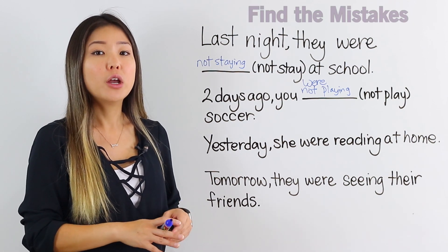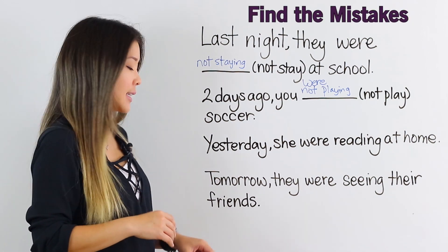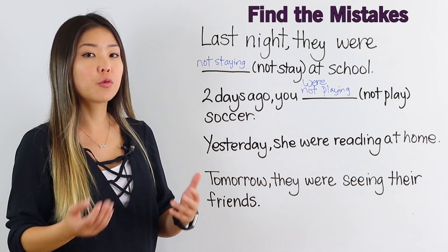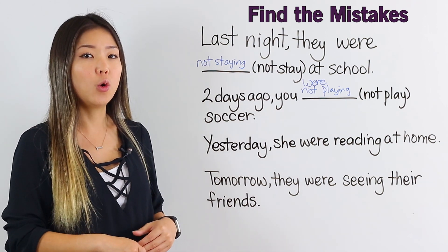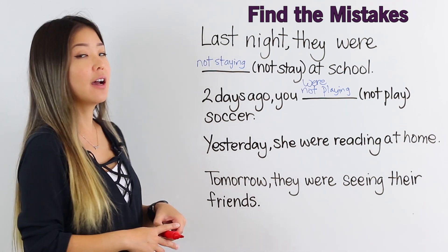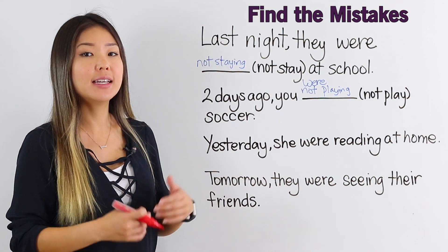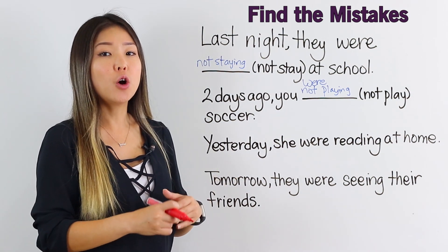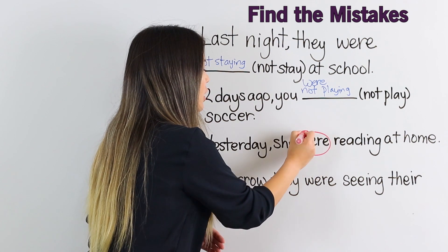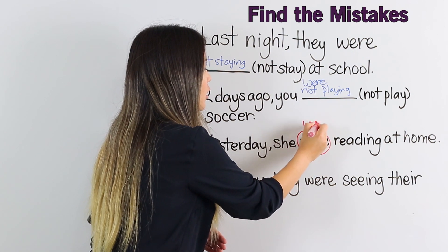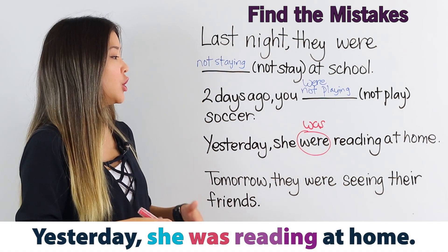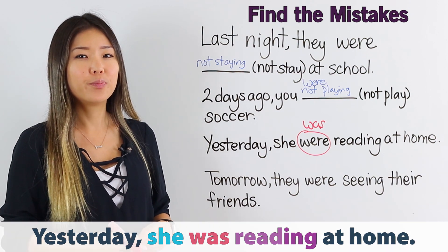Now, try to find the mistake in the next sentence: Yesterday, she were reading at home. The subject of this sentence is she, so the be verb to use is not were — it's was. Yesterday, she was reading at home.